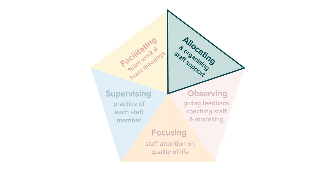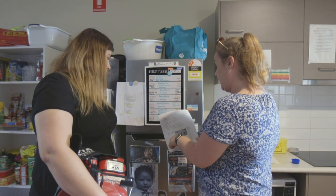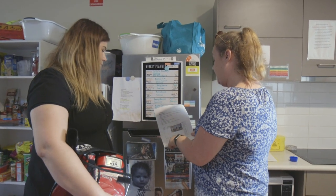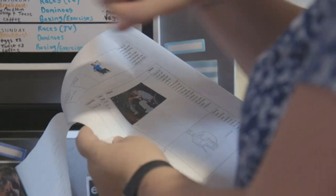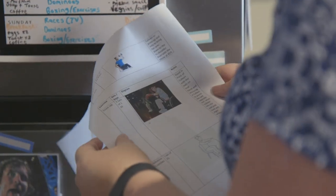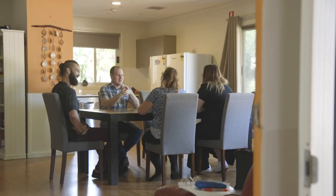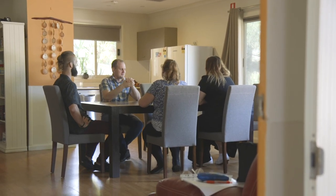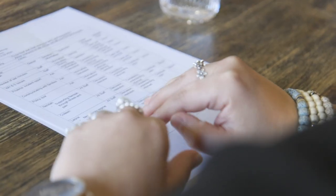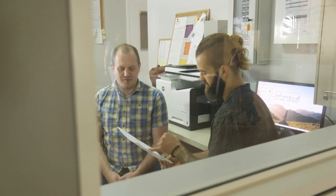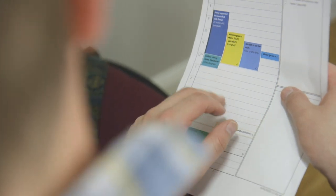The second task of practice leadership is allocating and organizing staff support. This involves ensuring support is provided when people want and need it. Staff need to know how to support each individual — how the person prefers to be supported and what is the best way to support them. This information needs to be communicated to staff, and shift plans are one way of communicating to staff what's happening each day and how to support each person.